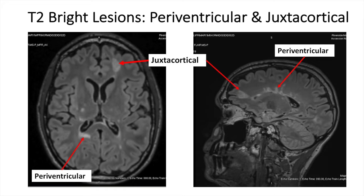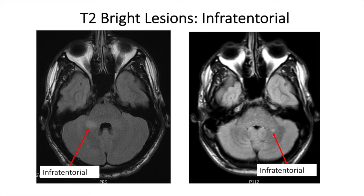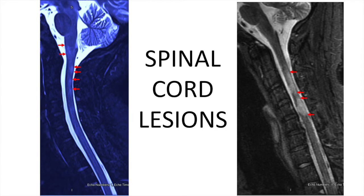The second example is juxtacortical. Juxtacortical means the lesion is located right at the junction between the gray matter on the outside of the brain and the white matter underneath. Another location for MS T2 bright lesions is infratentorial, meaning in the brainstem — here you see two examples of brainstem lesions. A fourth common location for new MS lesions is in the spinal cord, as you see here on these two MRIs.